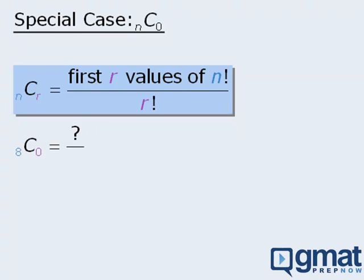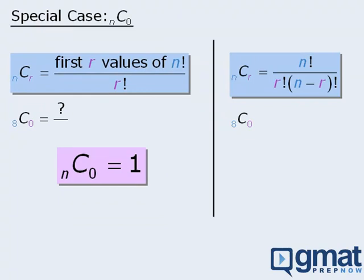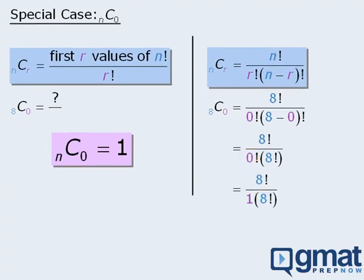Fortunately, there are a few ways to deal with this special case. One way is to apply the simple rule that n choose zero always equals one. This should make sense because if we have eight employees and want to select zero of them for a committee, there's only one way to do this: nobody gets to be on the committee. Alternatively, using the conventional formula with n equals eight and r equals zero, and recalling that zero factorial equals one, the numerator and denominator are equal, so everything simplifies to one. Since n choose zero always equals one, there's no need to apply any formulas for this special case.